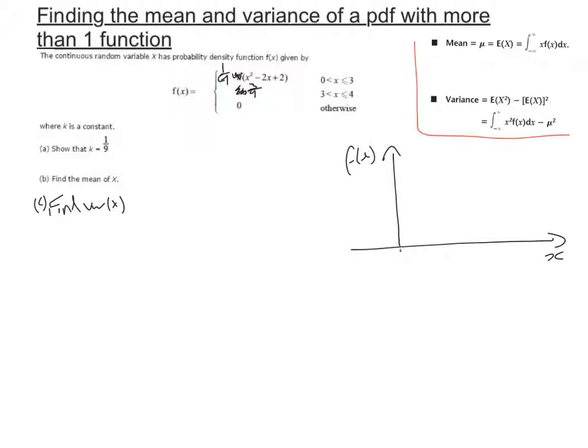Between 0 and 3 it's a positive quadratic, and between 3 and 4 it's a straight line. I'm going to draw in that straight line first. It's a straight line at 3 ninths, which is a third.